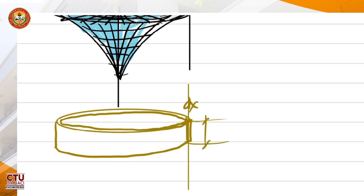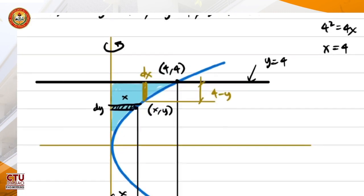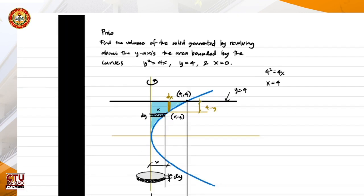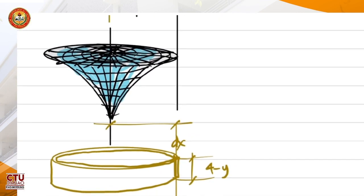With thickness dx. So the altitude of the shell is just 4 minus y. And how about the radius of the shell? If this point is also x, y, so this is y and this is x. So therefore, the radius of the shell is still x.